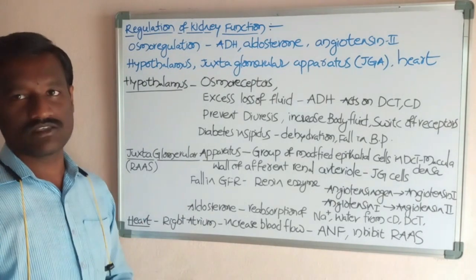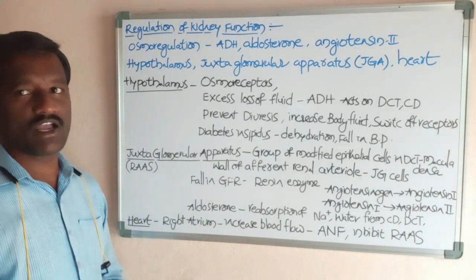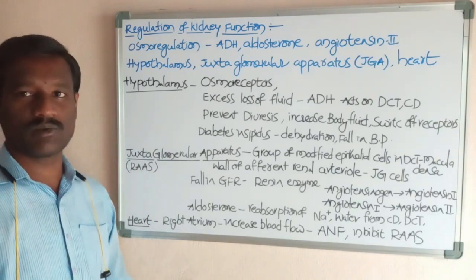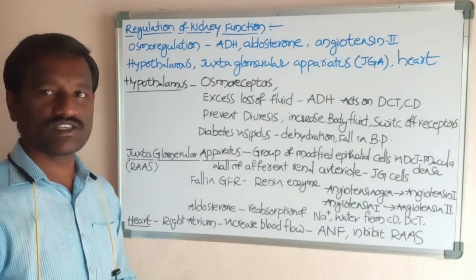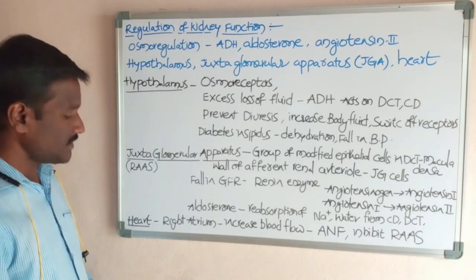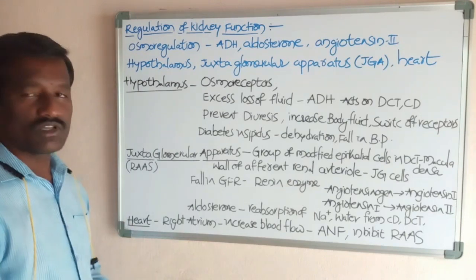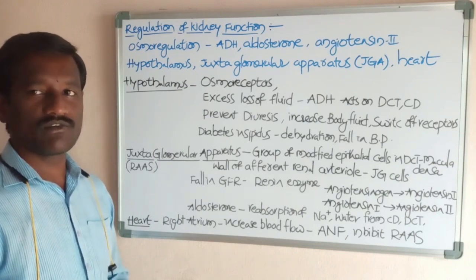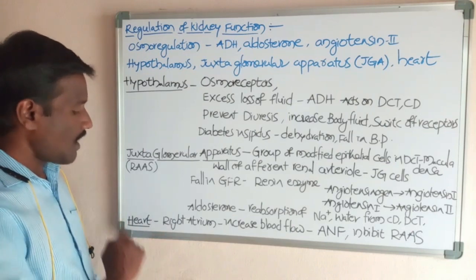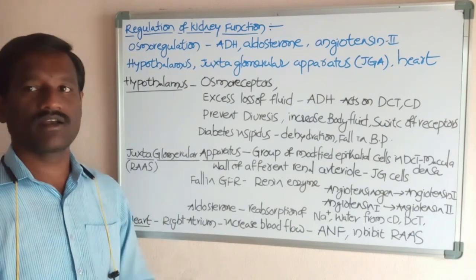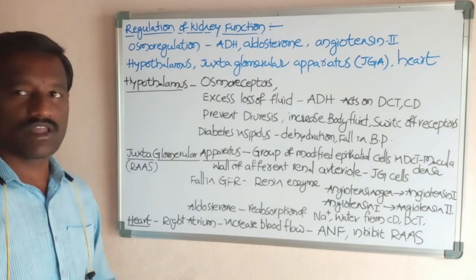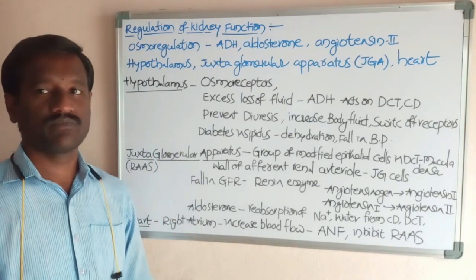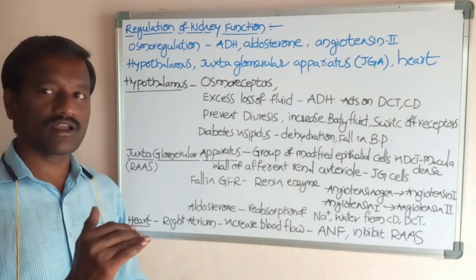This entire mechanism is also called the renin-angiotensin-aldosterone system (RAAS). Next, the role of the heart in the maintenance of kidney function: the heart has the right atrium.